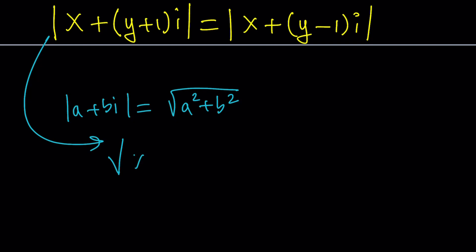The square root of X squared plus Y plus one squared equals the square root of X squared plus Y minus one squared.